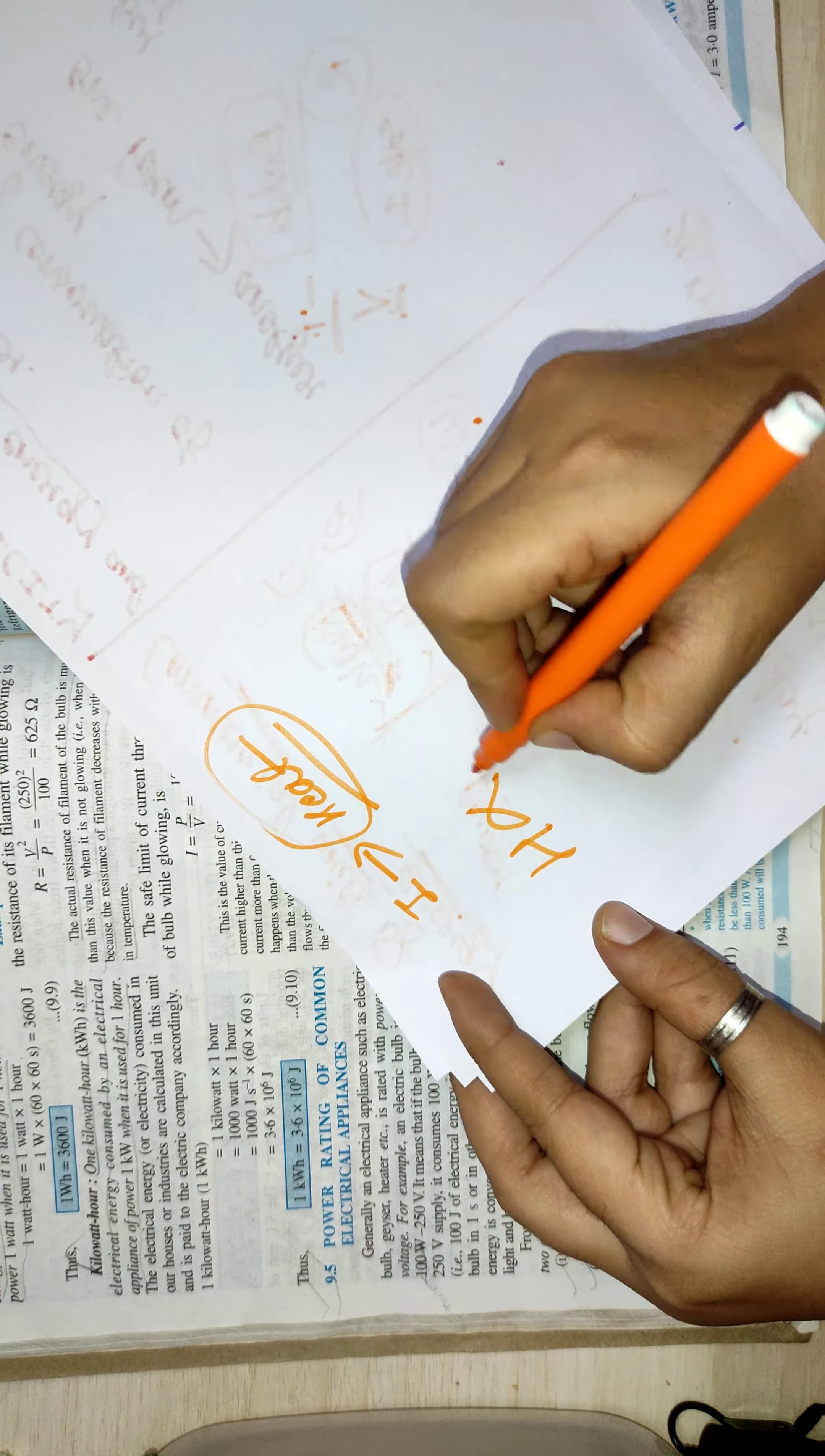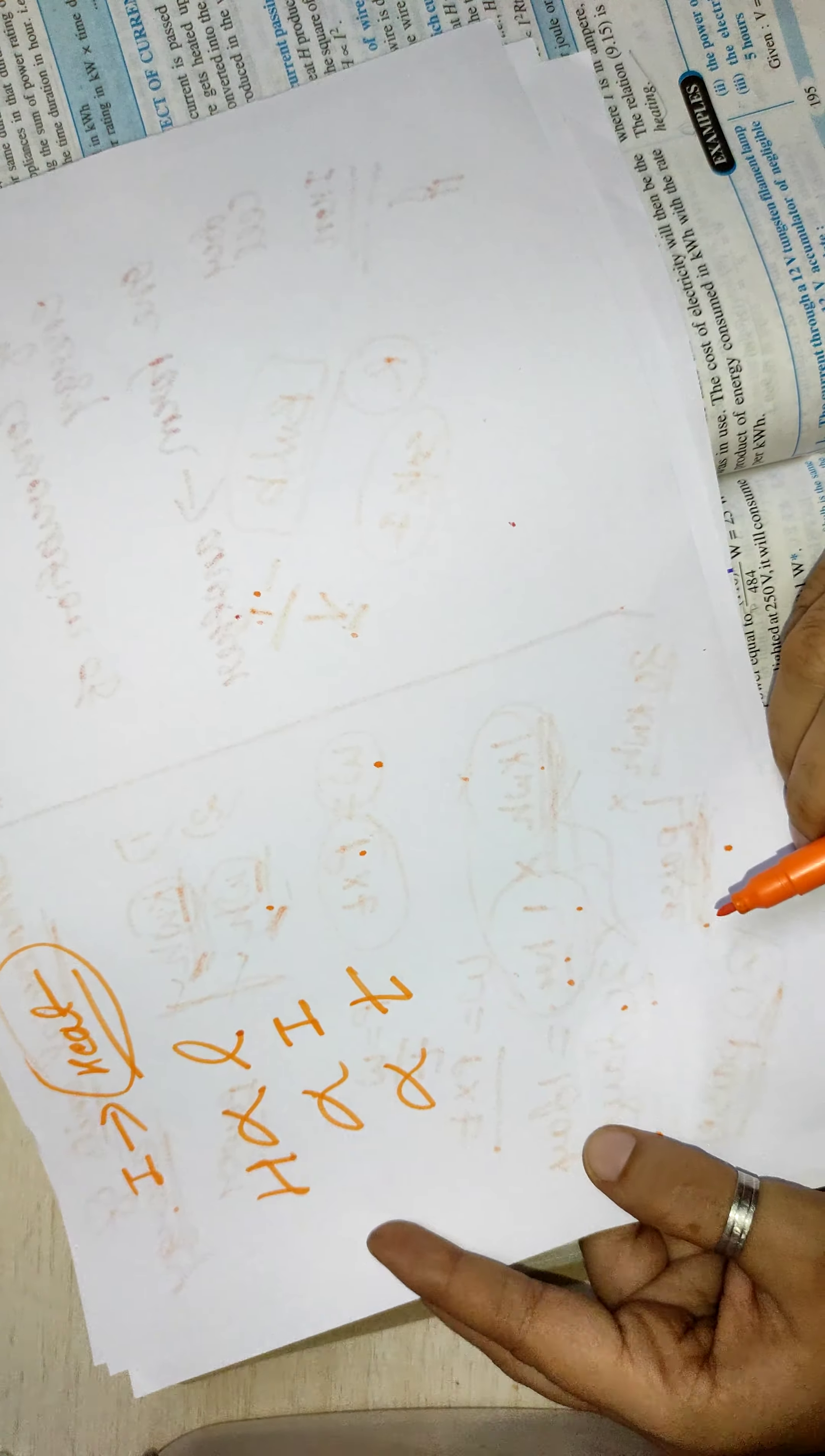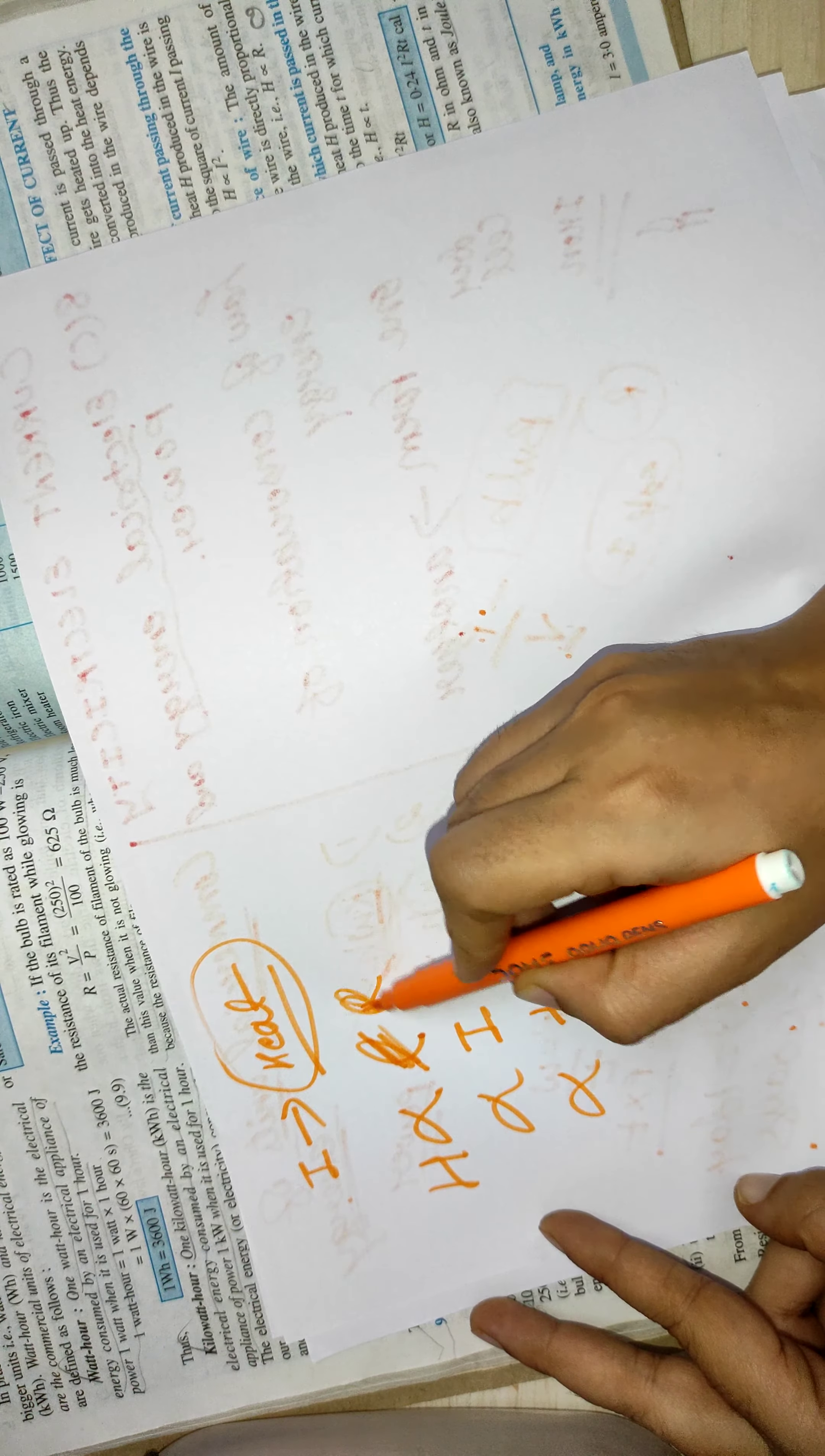This heat produced H is directly proportional to the resistance of the conductor, the current flowing in the conductor, and it is directly proportional to the time for which the current is flowing. So here is one equation: H is equal to I squared R T. In spite of length, it is resistance.